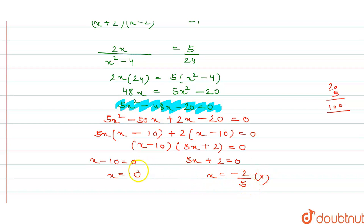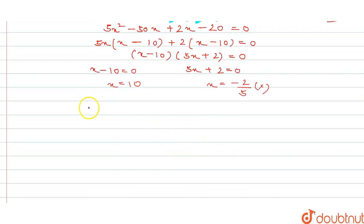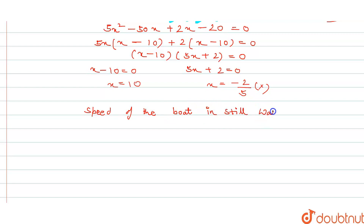Since x equals minus 2/5 is negative and a fraction, it is neglected. Therefore, the speed of the boat in still water is equal to 10 km per hour. This is the required answer. Thank you!